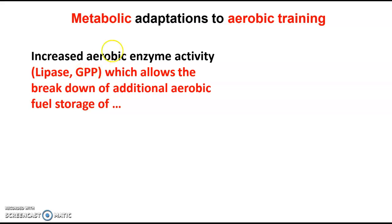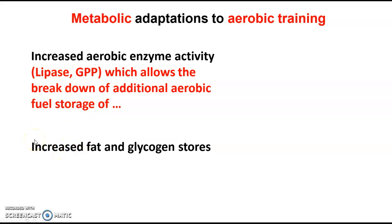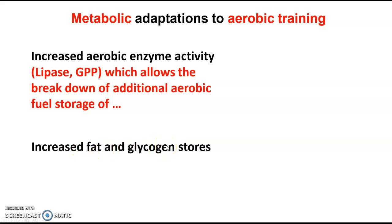The second metabolic adaptation: if we get more active enzymes that can break down fuels to create ATP, we also have an increase in the stores of those fuels — fat and glycogen. We increase naturally the amount of fat and glycogen stored, which means we can break it down more. But without an increase in aerobic enzyme activity, we can't break down the fuels to resynthesize ATP. These two work as a pair — more enzymes and more fuel to break down — which allows us to perform aerobically for longer.